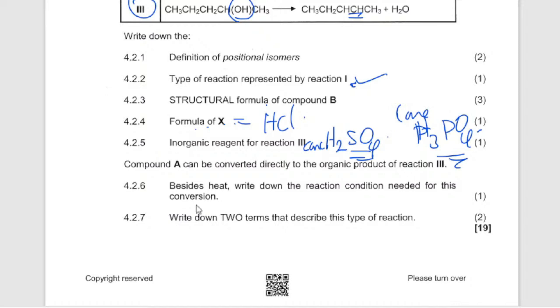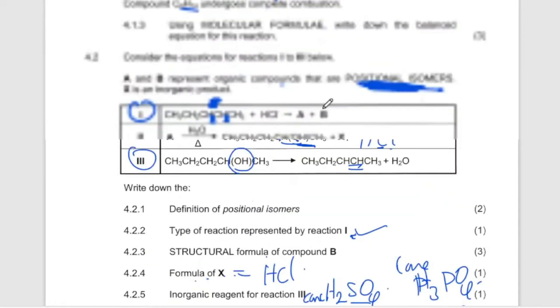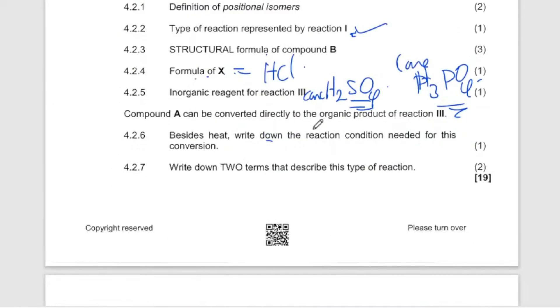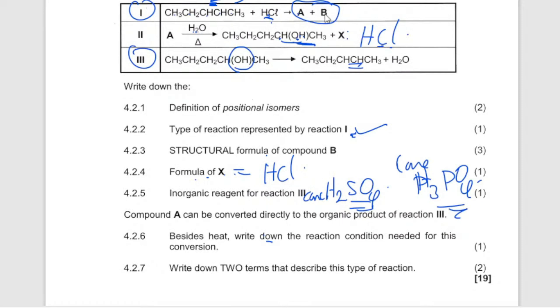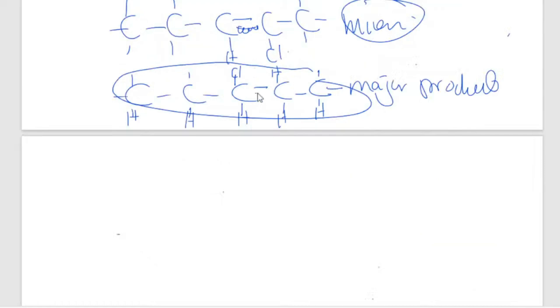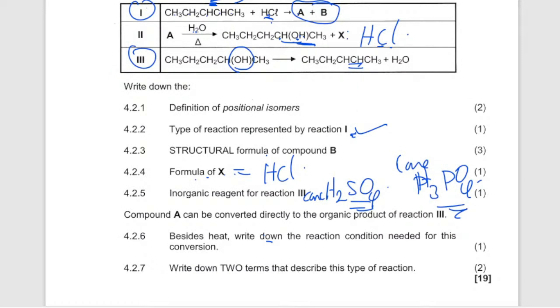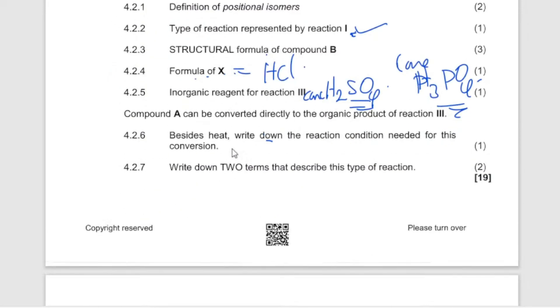Then we go to the next question. Besides heat, write down the reaction condition needed for this conversion. Besides heat. Yeah. Compound A, let's go back to compound A. We saw it. Compound A can be converted directly to compound E. From here to here, from here, from hydrogen halide, this one, to direct to alkene. So what do you need there? In that case, the first thing you need to know, that no water is needed. Yes, that's the first thing. Then number two, use a strong base, strong base.